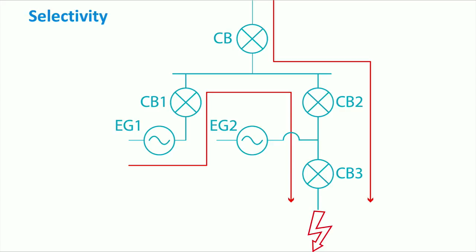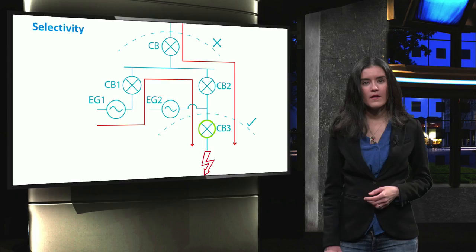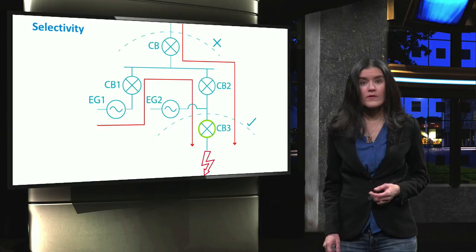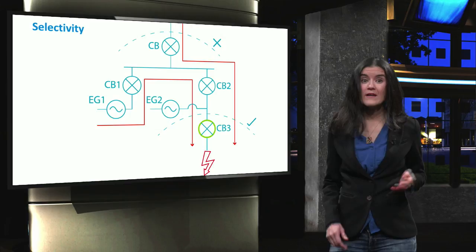If this happens, then the selectivity criterion is met, because only a minimal section of the power system is affected by the fault. However, if circuit breaker 3 is not properly operated, then circuit breaker 2 shall be disconnected. When the disconnection of circuit breaker 2 takes place, also generator number 2 is disconnected.